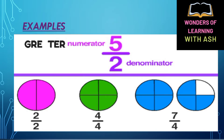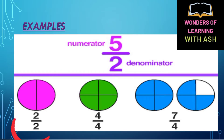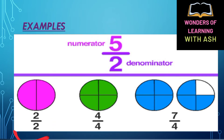Here we have numerator 5 and denominator 2. Viewers, you can see this is a pink circle. In this pink circle there are two parts and both are shaded. This means it is 2 by 2, which means one whole — a complete circle shaded. So 2 by 2 is one complete whole circle, which is shaded, so this is also an improper fraction.